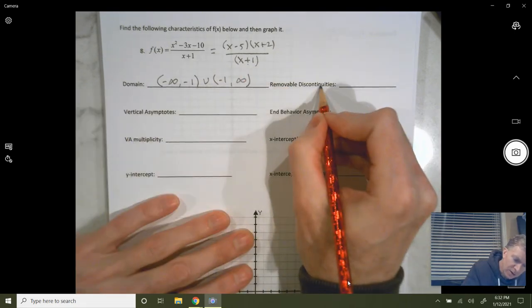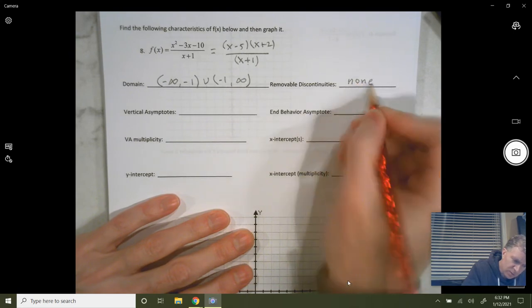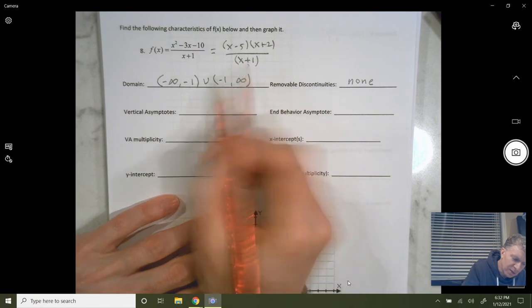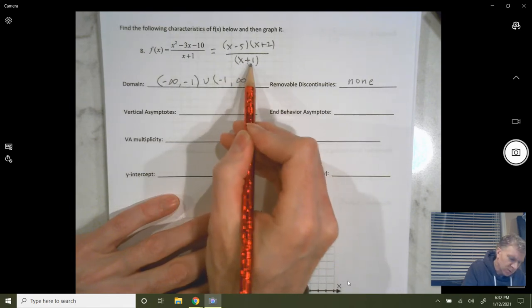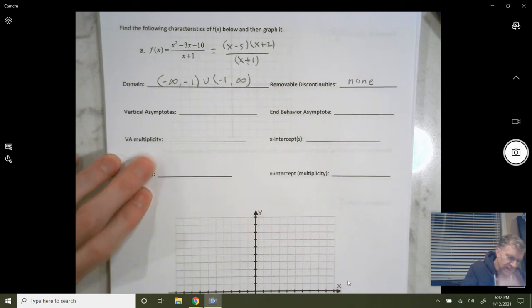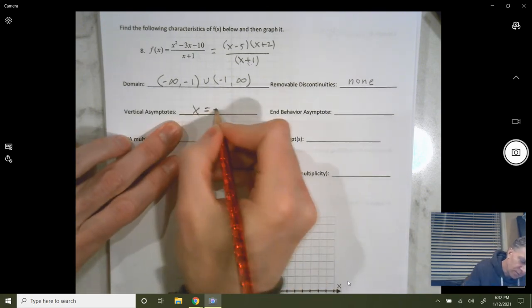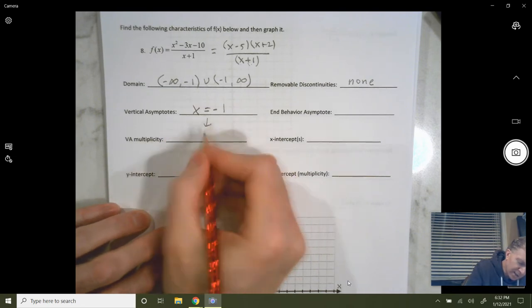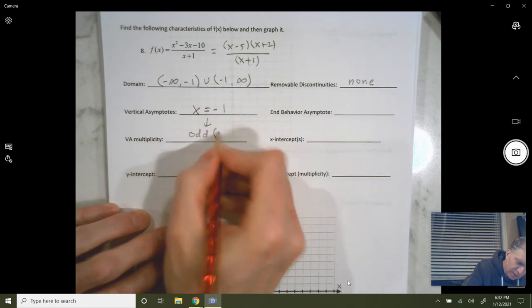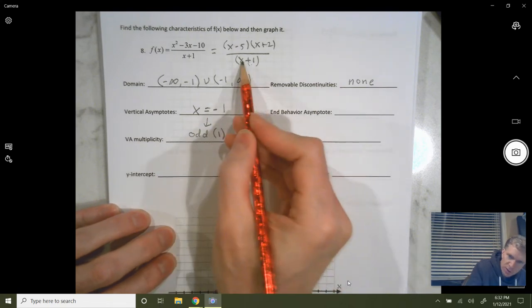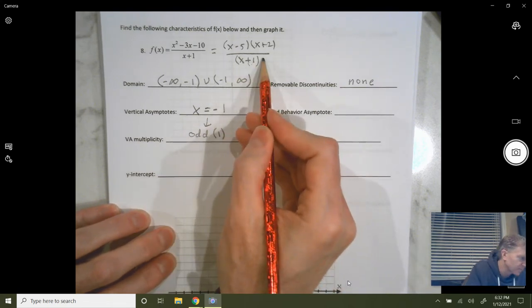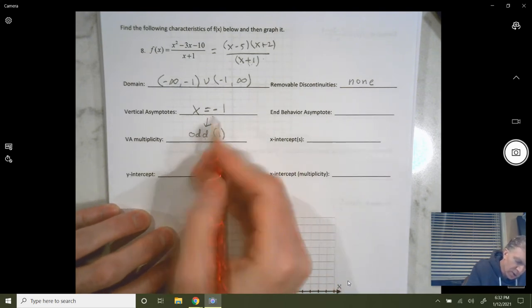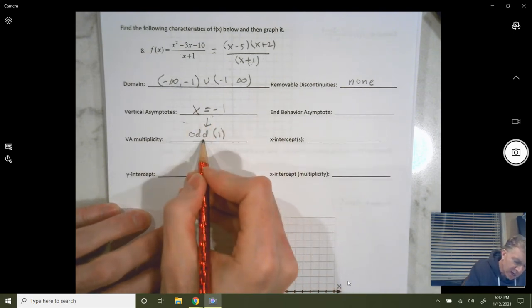Removable discontinuities, there are none. The reason there are none, because there's no factors that cancel. This discontinuity at negative 1 is going to be a vertical asymptote, because the x plus 1 factor doesn't cancel. So, x equals negative 1. The multiplicity of that asymptote is odd, more specifically is 1, because that's just x plus 1 to the first. And what that tells us is that coming towards this asymptote, our graph is going to approach that in opposite directions.